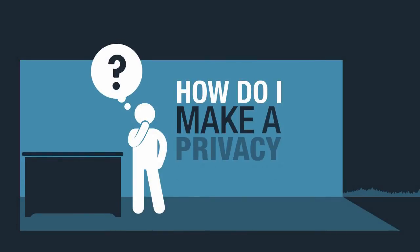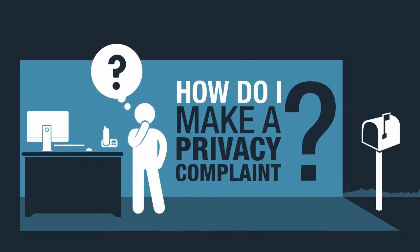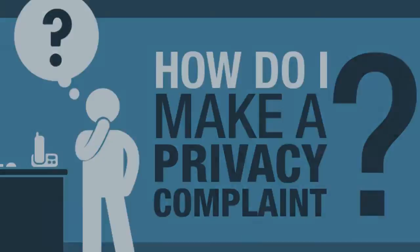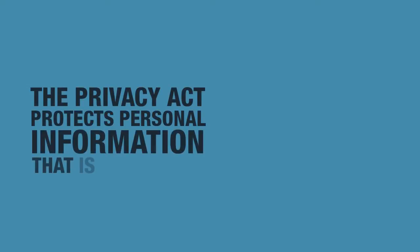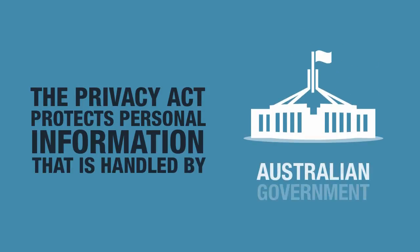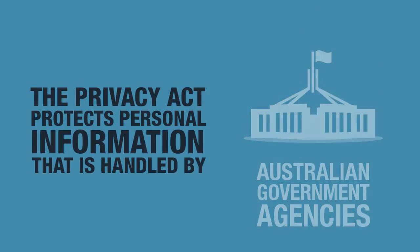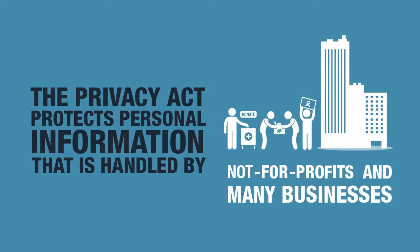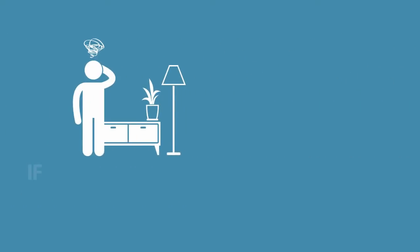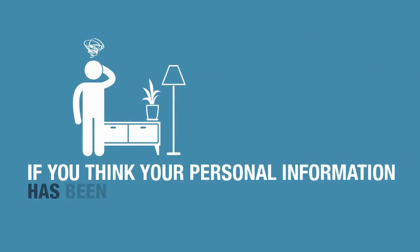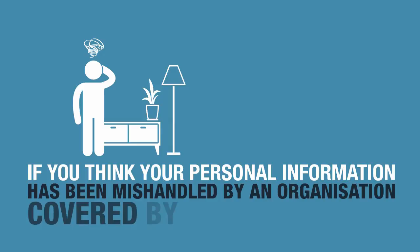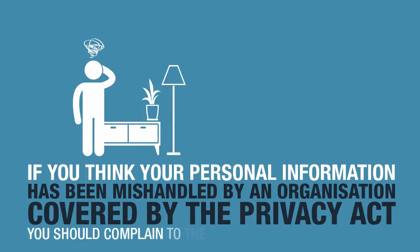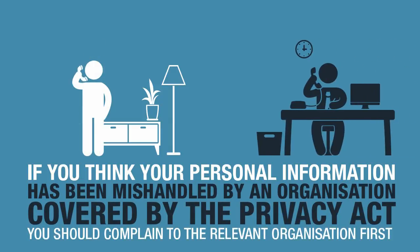How do I make a privacy complaint? The Privacy Act protects personal information that is handled by Australian government agencies, not-for-profits and many businesses. If you think your personal information has been mishandled by an organisation covered by the Privacy Act, you should complain to the relevant organisation first.